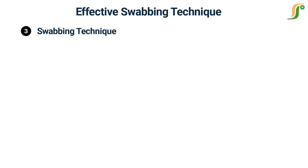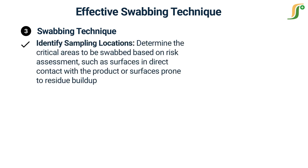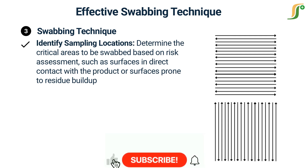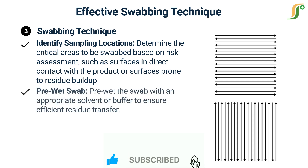Swabbing technique. Follow these key steps for effective swabbing technique. Identify sampling locations — determine the critical areas to be swabbed based on risk assessment, such as surfaces in direct contact with the product or surfaces prone to residue buildup. Pre-wet the swab with an appropriate solvent or buffer to ensure efficient residue transfer.